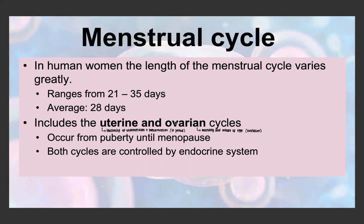There are two parts to the menstrual cycle: the uterine cycle and the ovarian cycle. The uterine cycle is the thickening of the endometrium and menstruation — which is the period. We often think of the period as being the entire menstrual cycle, but it's in fact a lot more complicated. The ovarian cycle is the maturation and release of eggs. The menstrual cycle occurs from puberty until menopause, and both cycles are controlled by the endocrine system.